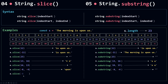If I use a negative number for index start and a positive number for index end: slice starts from minus 8, but since 4 is before minus 8 in the string, it returns an empty string. For substring, the negative index start becomes zero, so it goes from zero to four — four not included — returning 'the ' and then the space.